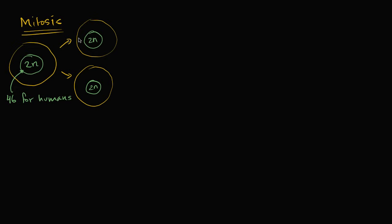And one way to think about it, it's a cycle. After each of these things go through mitosis, they can then go through the entire cell cycle again. Now what happens in meiosis?